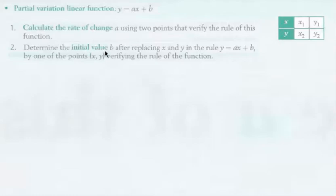And then you're going to determine the initial value b after replacing x and y in the rule y equals ax plus b by one of the points x, y verifying the rules of this function. So what you're going to do is, you know it's y equals ax plus b, right? And you've already figured out the a. So you're going to solve for the b.